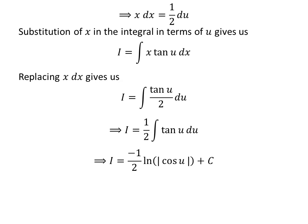So, I = -(1/2)ln|cos(u)| + C. C is the arbitrary constant of indefinite integration. Never forget to add this constant.